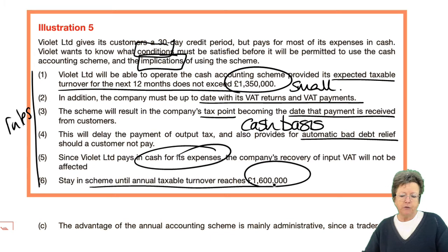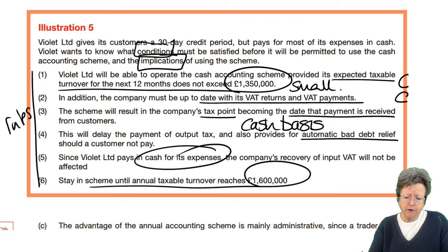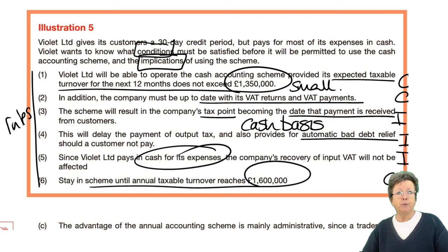So there are some slightly different rules and conditions. The turnover limit is a condition, being up to date is a condition, the change to tax point is an implication, automatic bad debt relief is an implication, and the exit threshold is a condition. That helps because you could get one of those multiple choice questions.